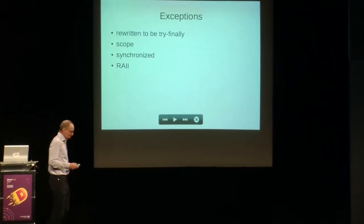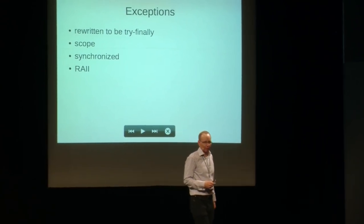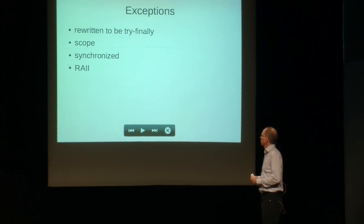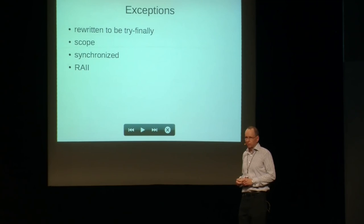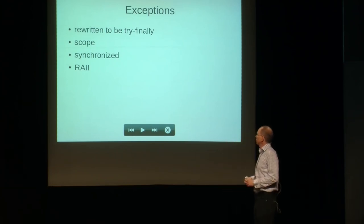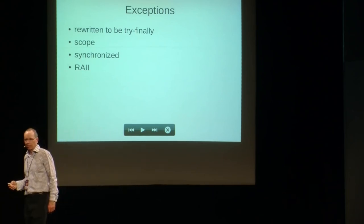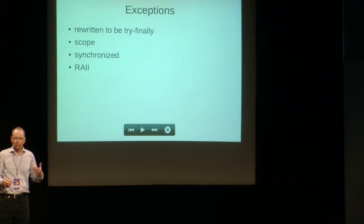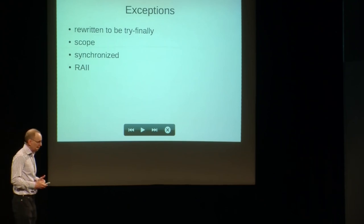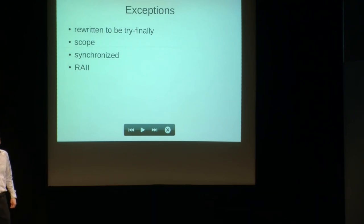Another extremely helpful lowering: all exceptions are lowered into try-finally, because exceptions are one of those things that really hurts your brain trying to figure out. It's much easier if there's only one case to think about. scope exit, scope failure, and scope success are all rewritten into the corresponding try-finally statements. The synchronized statement and RAII are also rewritten that way. That means the back-end only has to deal with try-finally, and when that was done it was a great pleasure to delete a bunch of code — a bunch of code and a bunch of bugs just went away.